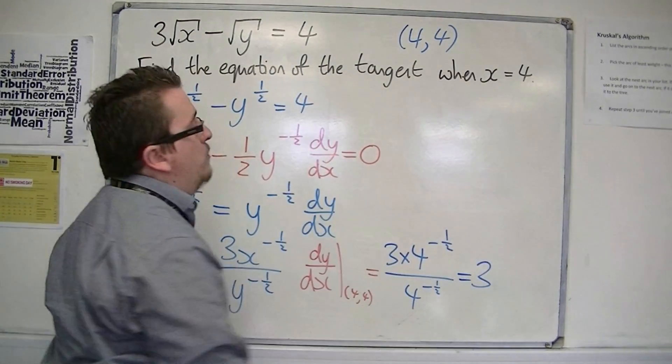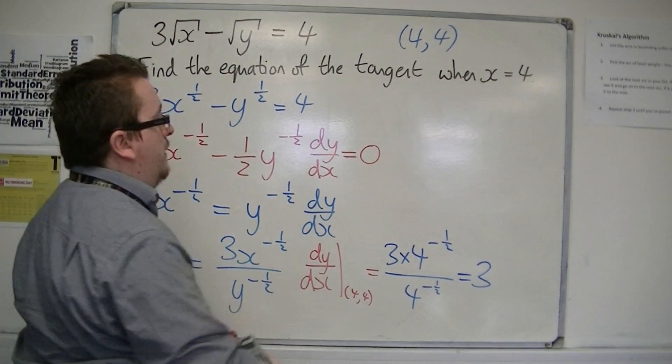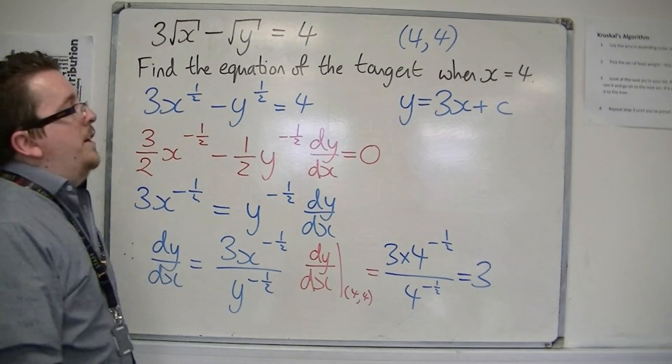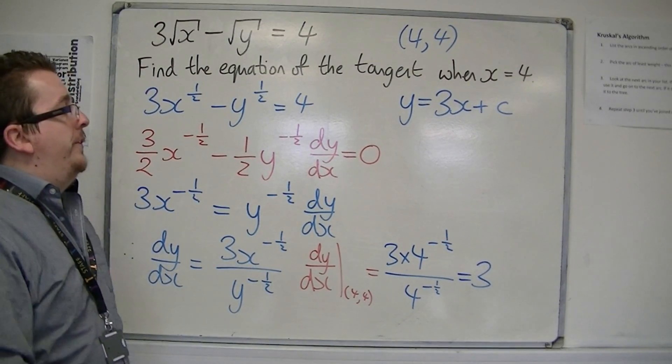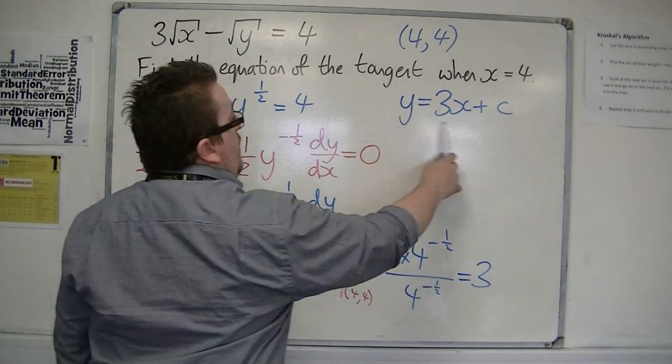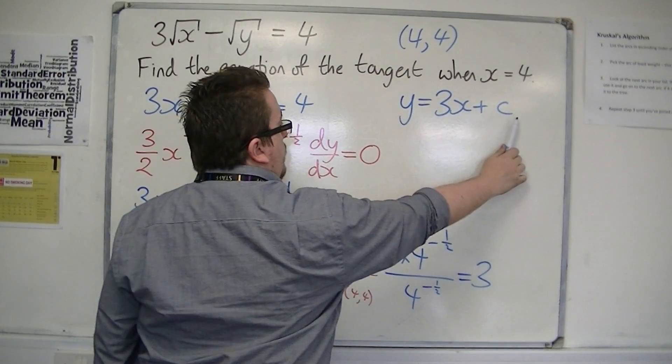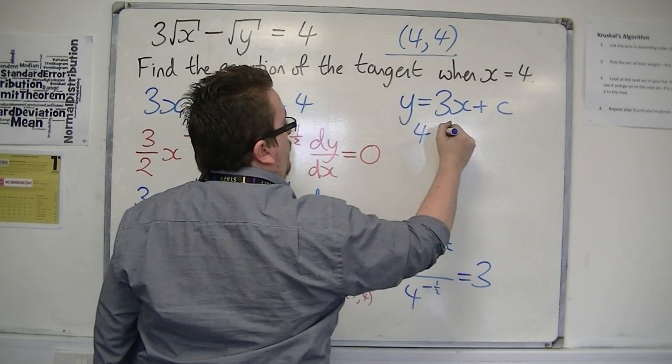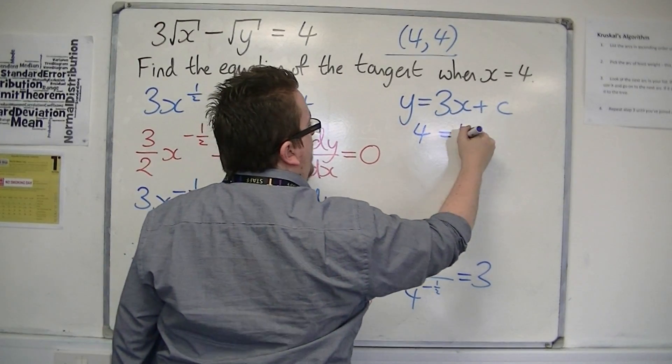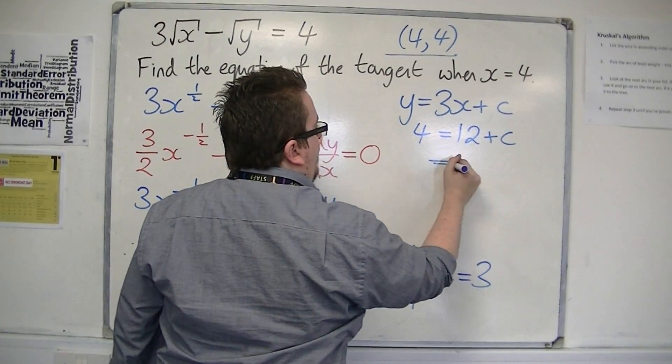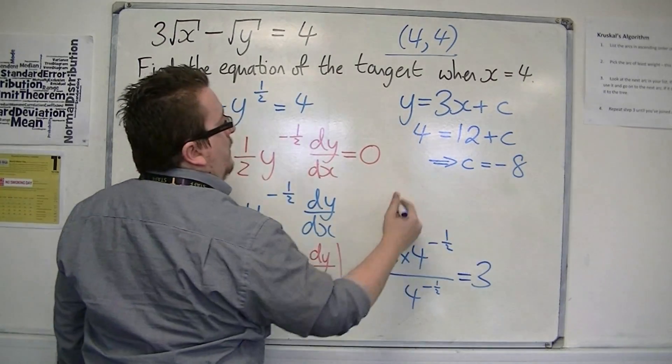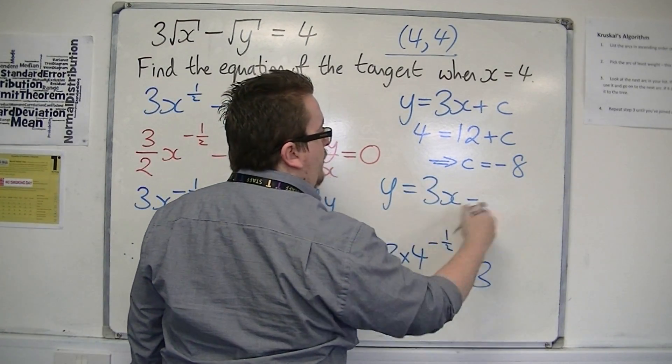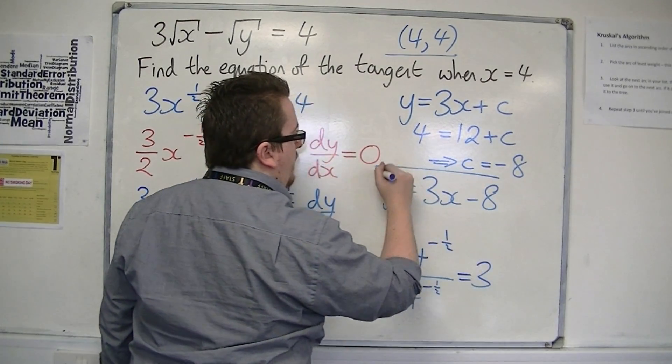OK, so that's the gradient of the tangent. So, the actual equation of the tangent line will look like this. y is equal to 3x plus c. I just need to work out the value of the constant c. I know that the gradient, rather the equation of the tangent, goes through this coordinate. So I can substitute 4, 4 in. 3 lots of 4 is 12. So c is equal to minus 8. So that means the final equation of the tangent is y equals 3x minus 8.